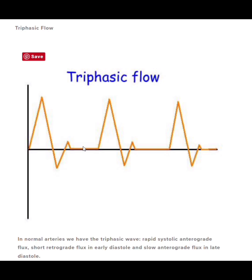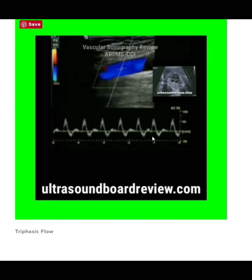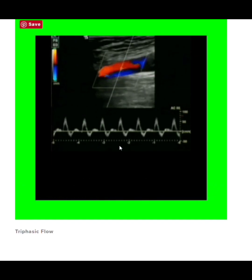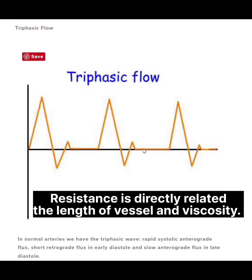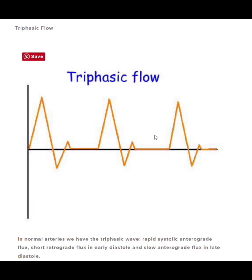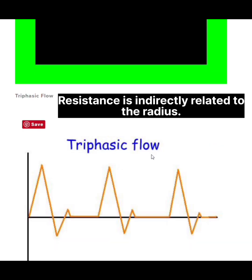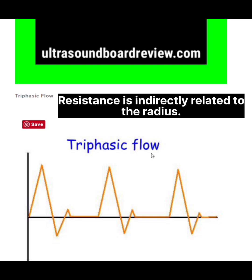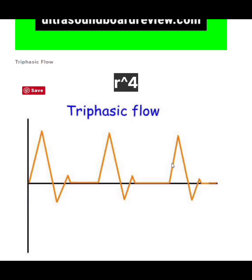Since this is a high velocity, high resistance flow, there won't be any flow in diastole — that's normal for any artery not feeding an organ. What maintains flow going in one direction is the pressure differences on all sides of an artery. Anytime resistance goes up, the length of the tube and viscosity have increased. Viscosity is how thick the blood is. If the radius of a vessel decreases, resistance increases, and the radius has the biggest effect because it's calculated to the fourth power.